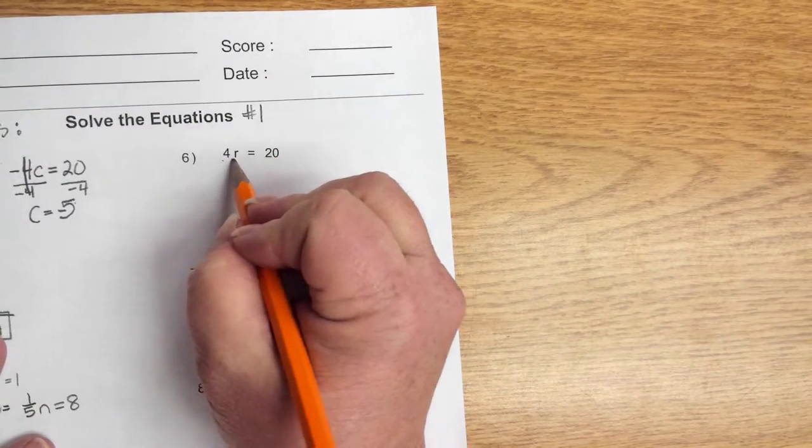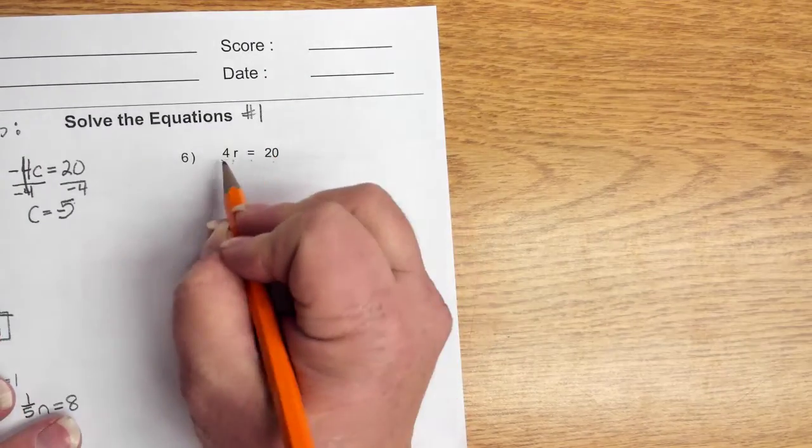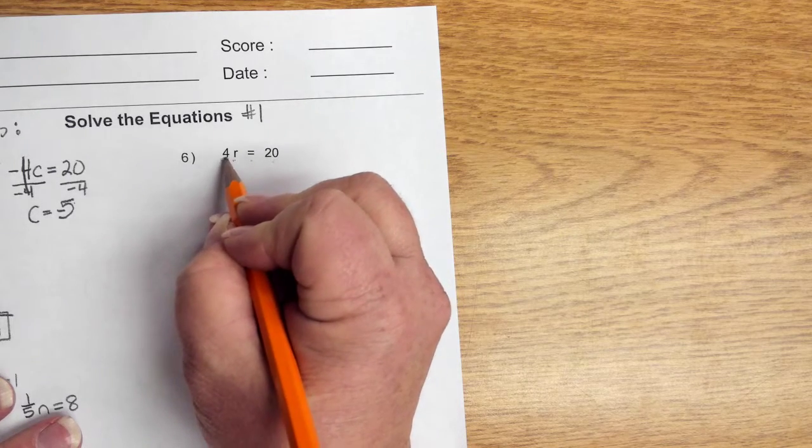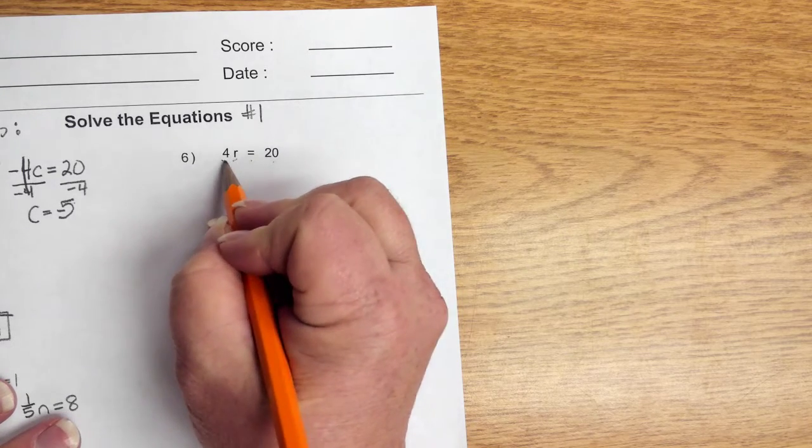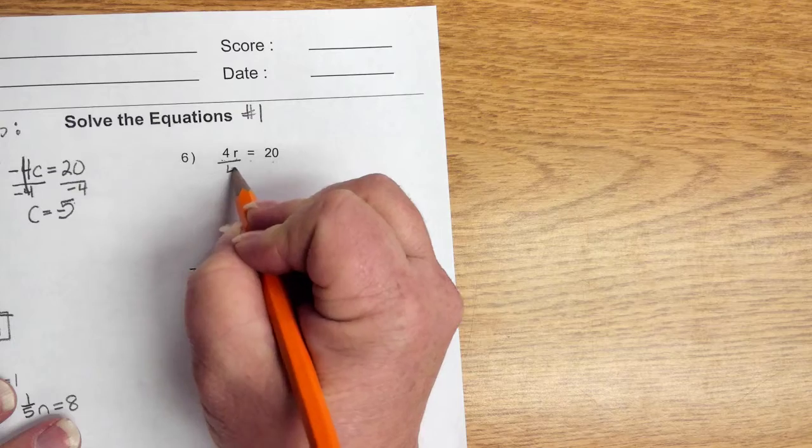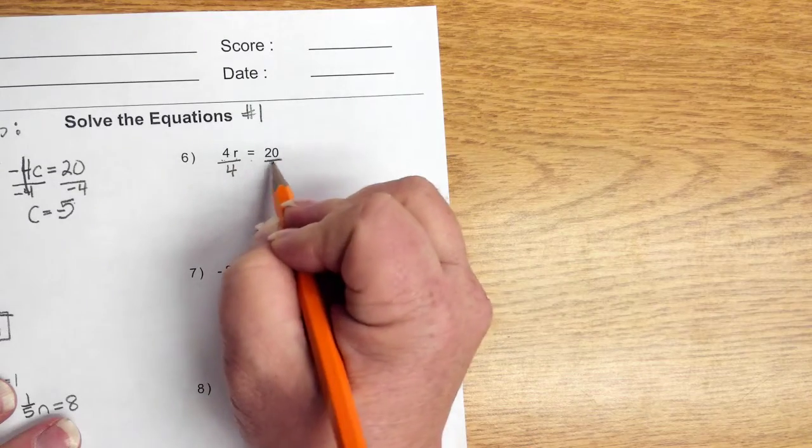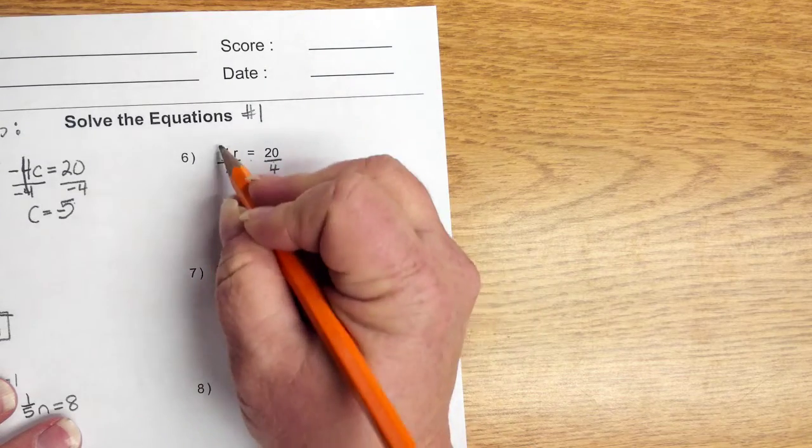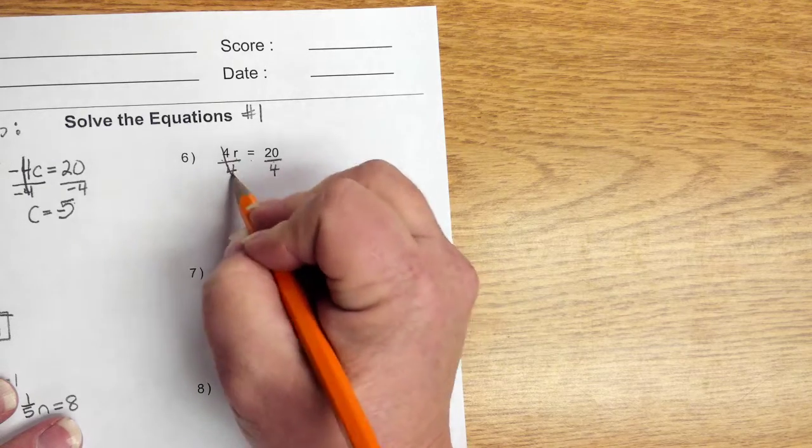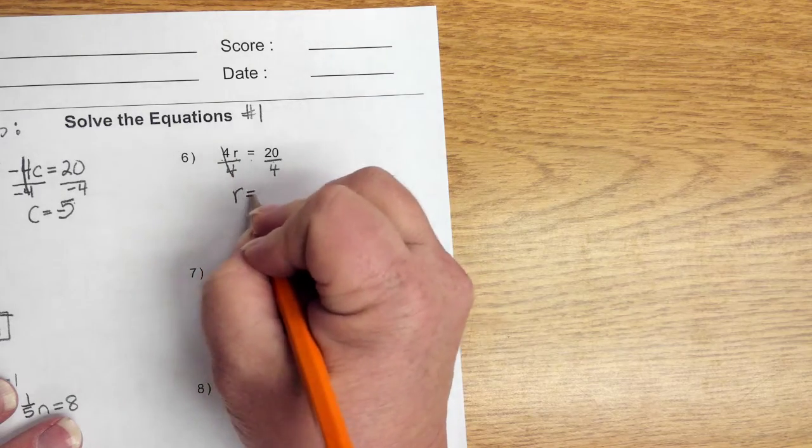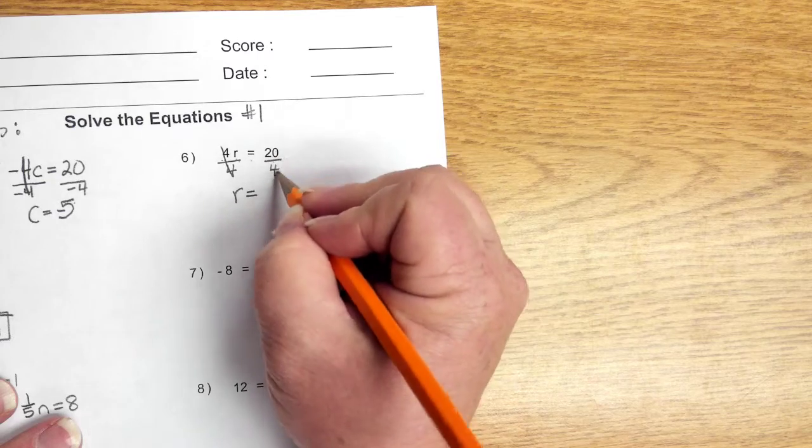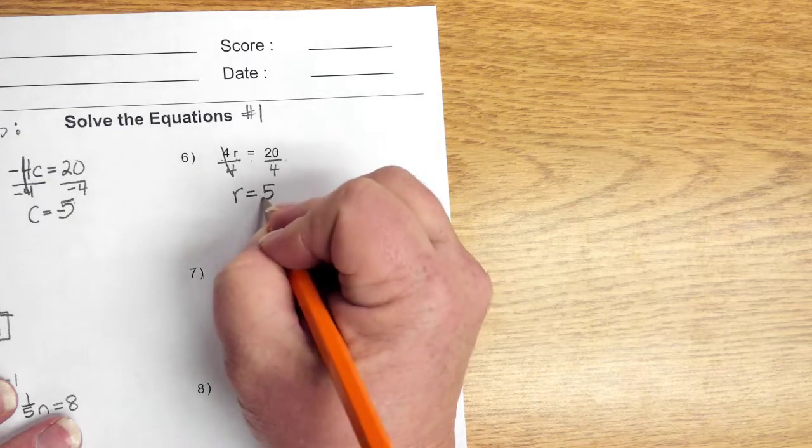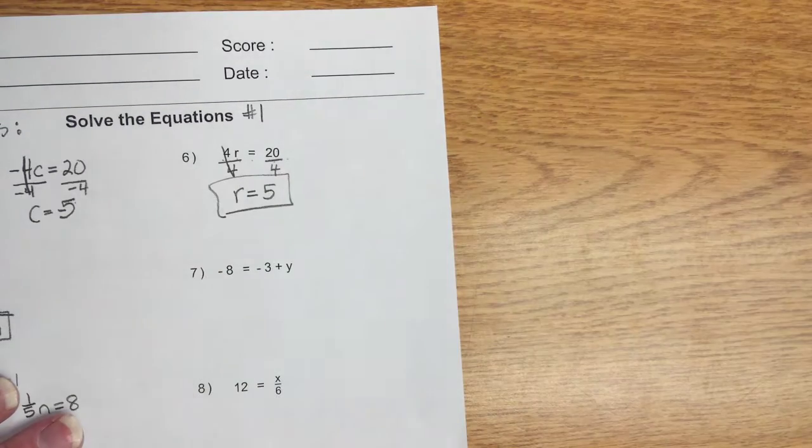We have 4r is equal to 20. Well, 4r means you are multiplying 4 times r. Remember, the opposite operation is division. So, we're going to divide both sides by 4. This 4 divided by 4 leaves you 1. So, you're going to have 1r or r. 20 divided by 4 gives you 5. And that is your answer. It's that simple.